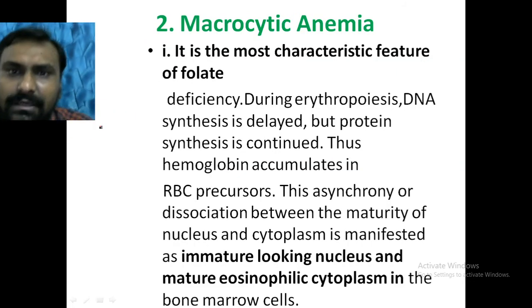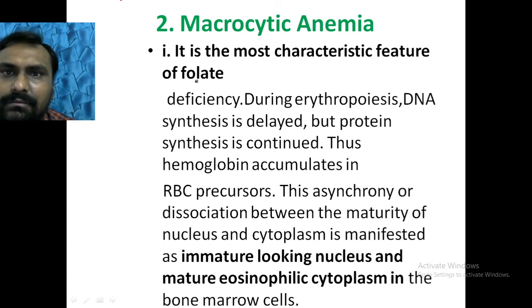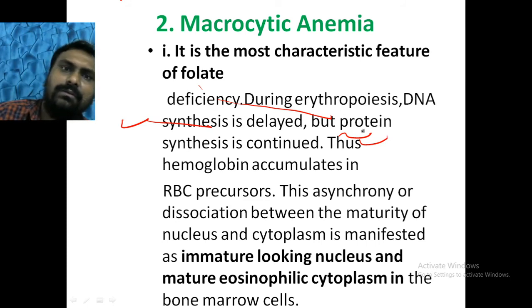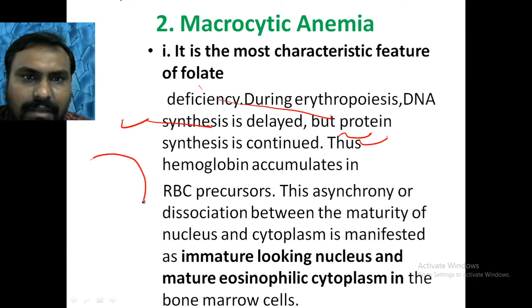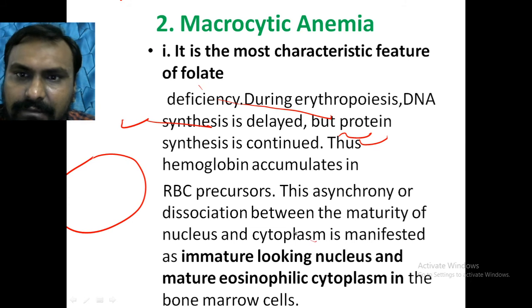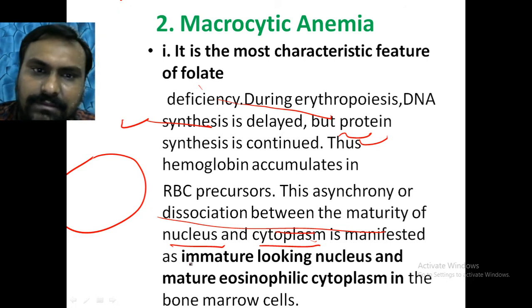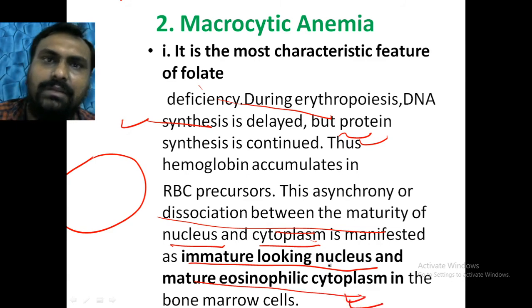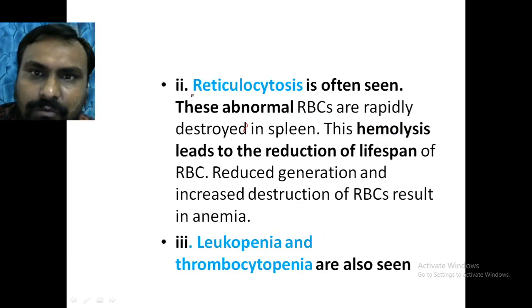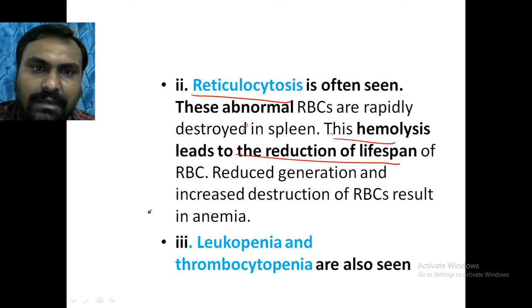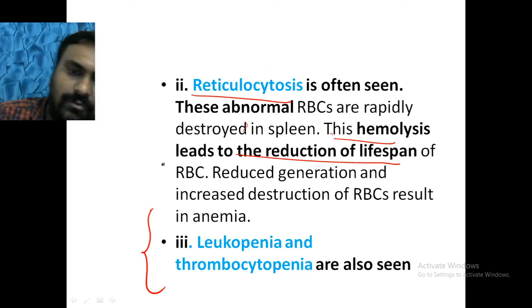DNA synthesis is affected, leading to macrocytosis. During erythropoiesis, DNA synthesis is delayed but protein synthesis continues — the machinery keeps forming RBC precursors. There is asynchrony between nuclear and cytoplasmic maturity: an immature-looking nucleus with mature eosinophilic cytoplasm. This is macrocytic anemia. There will also be reticulocytosis, hemolysis leading to reduced lifespan of RBCs, and thrombocytopenia with decreased WBC count.